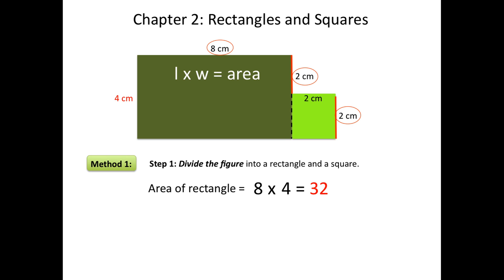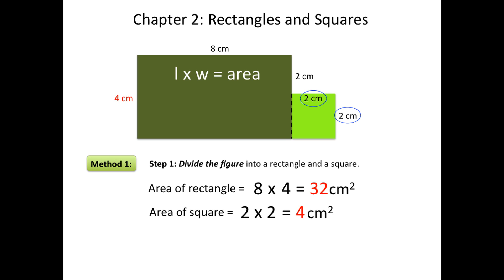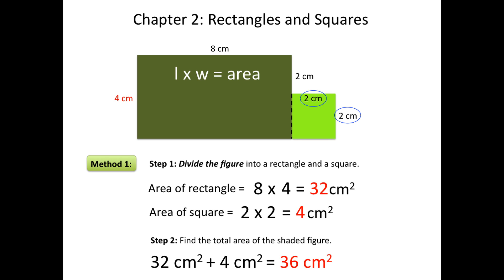But we're not done yet. Remember, always label your units. The area of the rectangle is 32 centimeters squared. Now we've found the area of the rectangle, so we have one part of the shaded figure complete. We now have to find the area of the square. The length and width of the square is 2 centimeters, so the area of the square is 2 times 2, or 4 centimeters squared. Now we're ready for step 2, which is to find the total shaded area. To find the total area, we just add together the area of the rectangle and the area of the square. 32 plus 4 equals 36 — the area of the shaded figure is 36 centimeters squared.